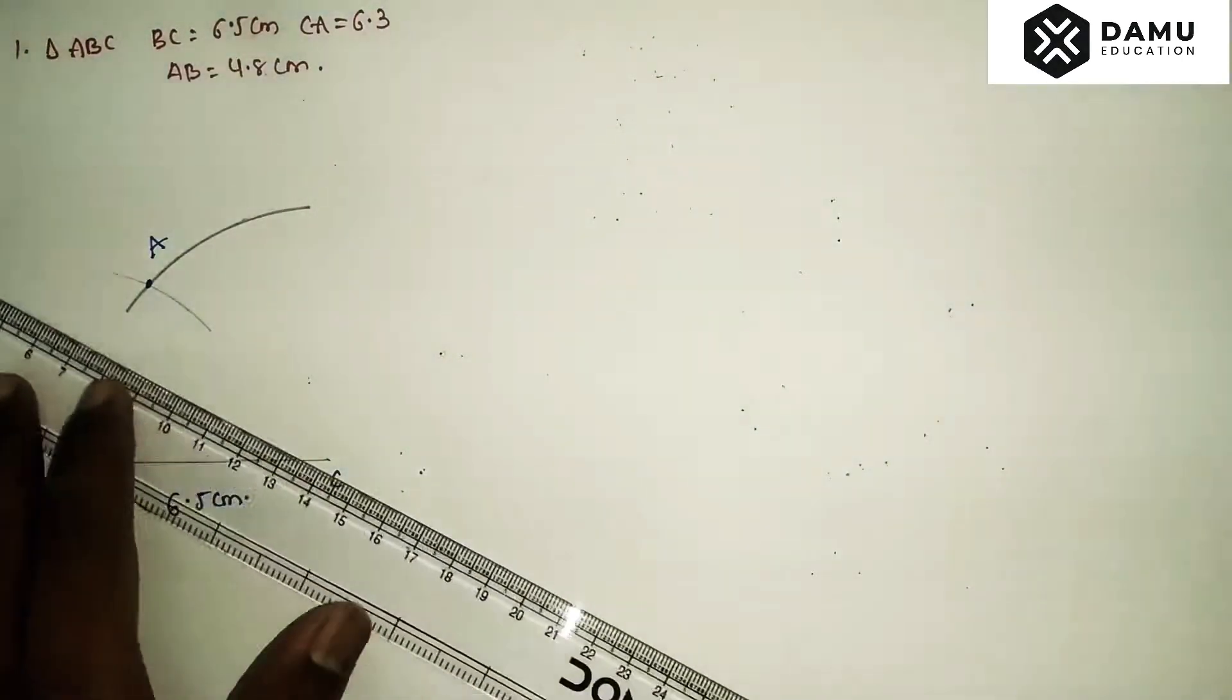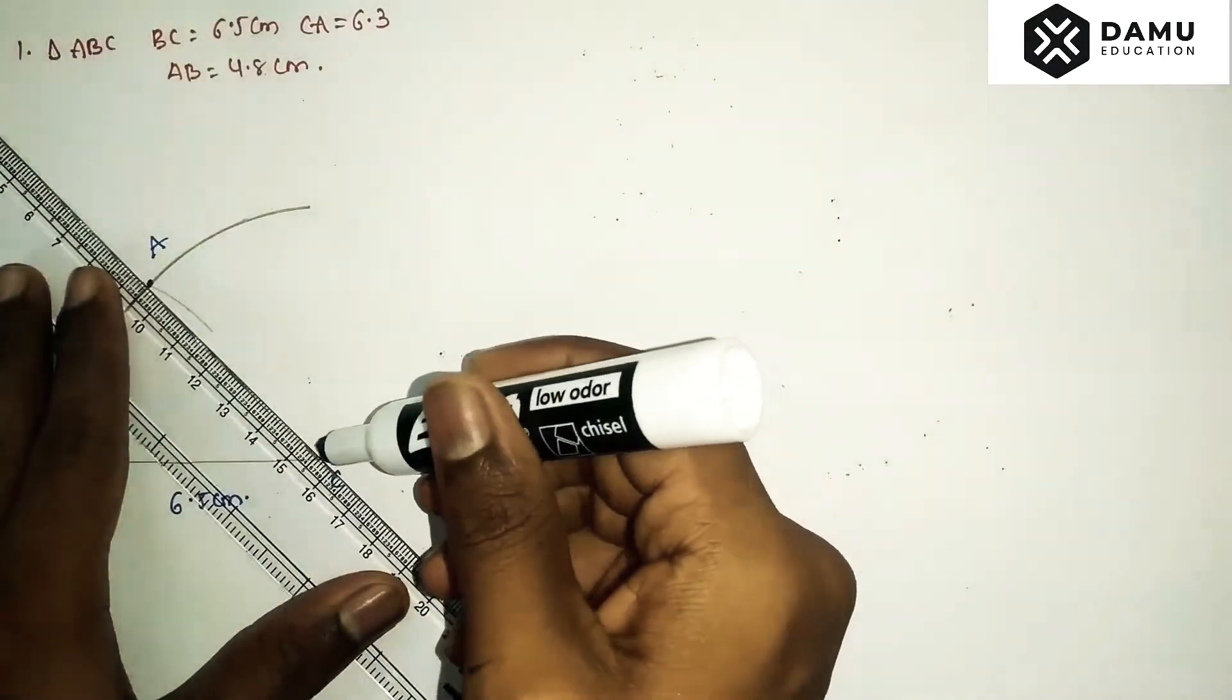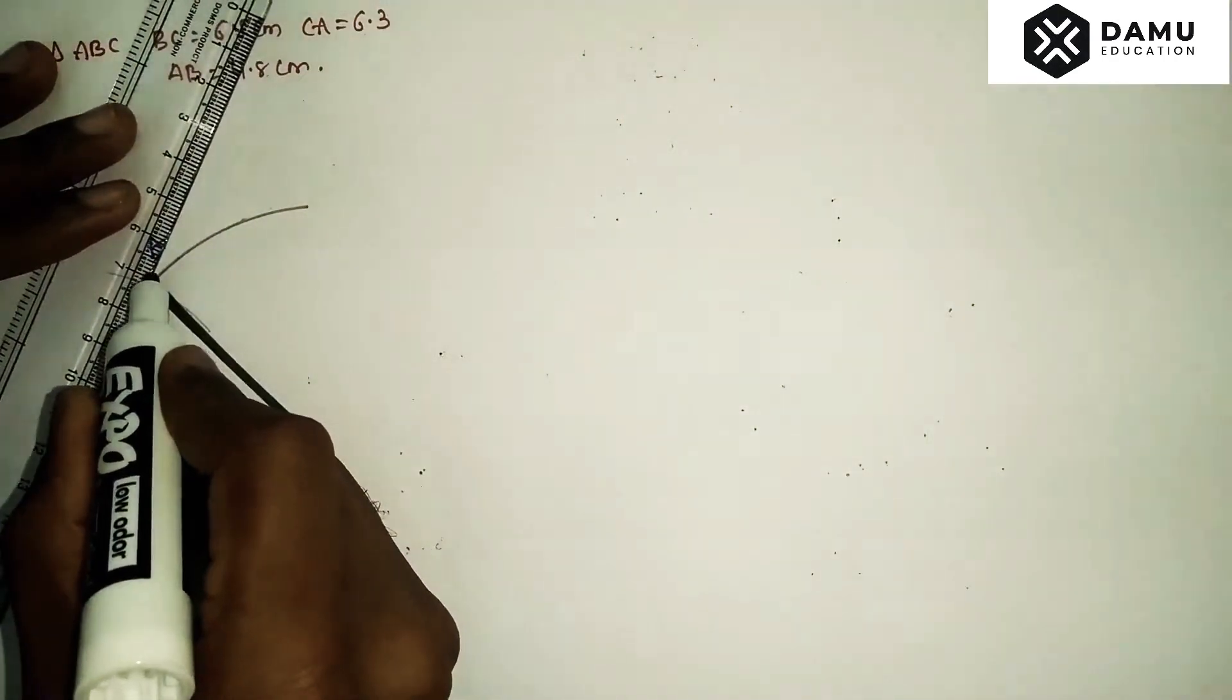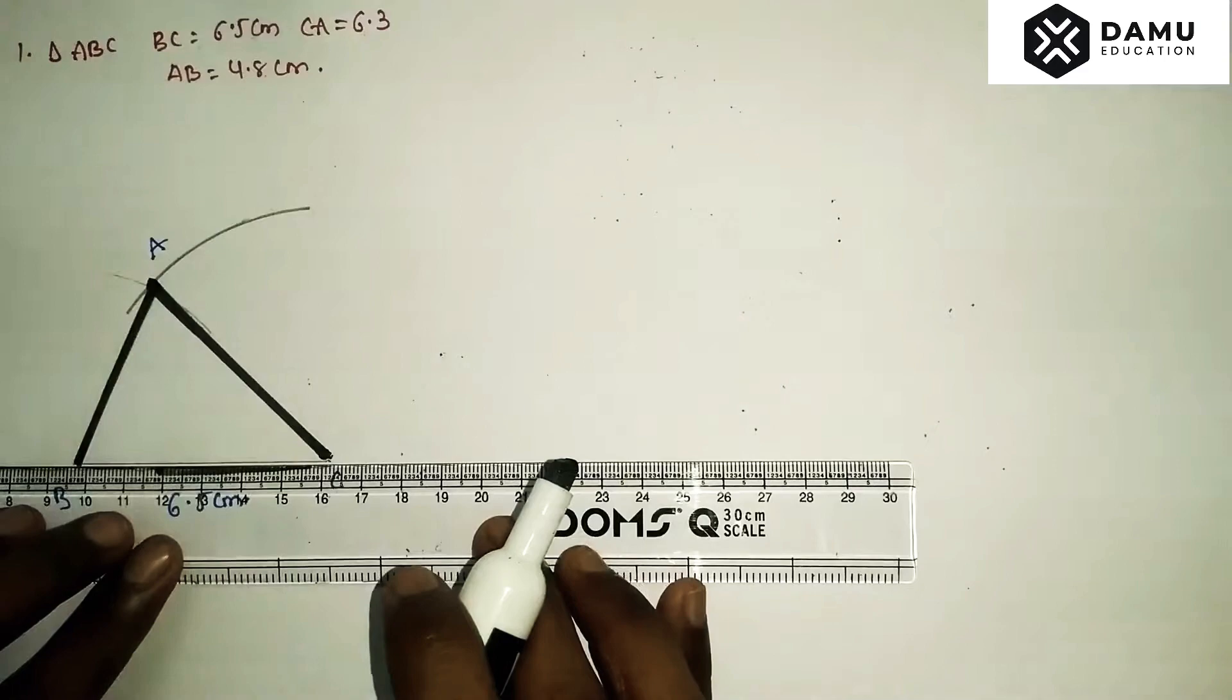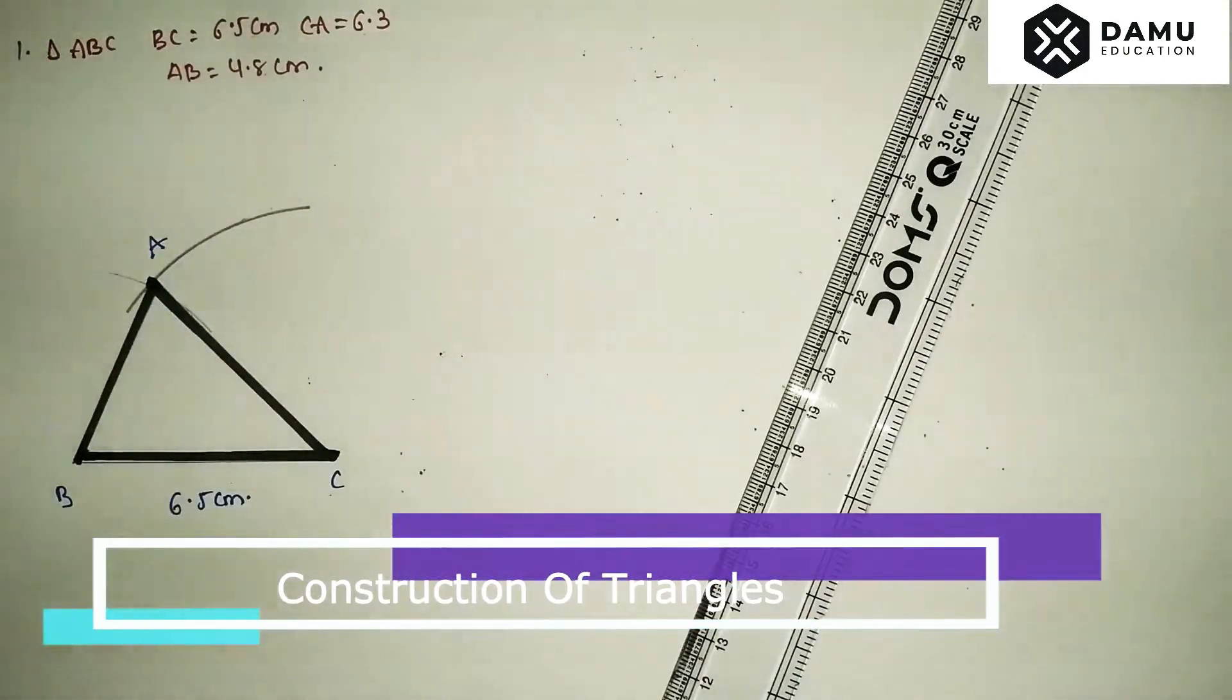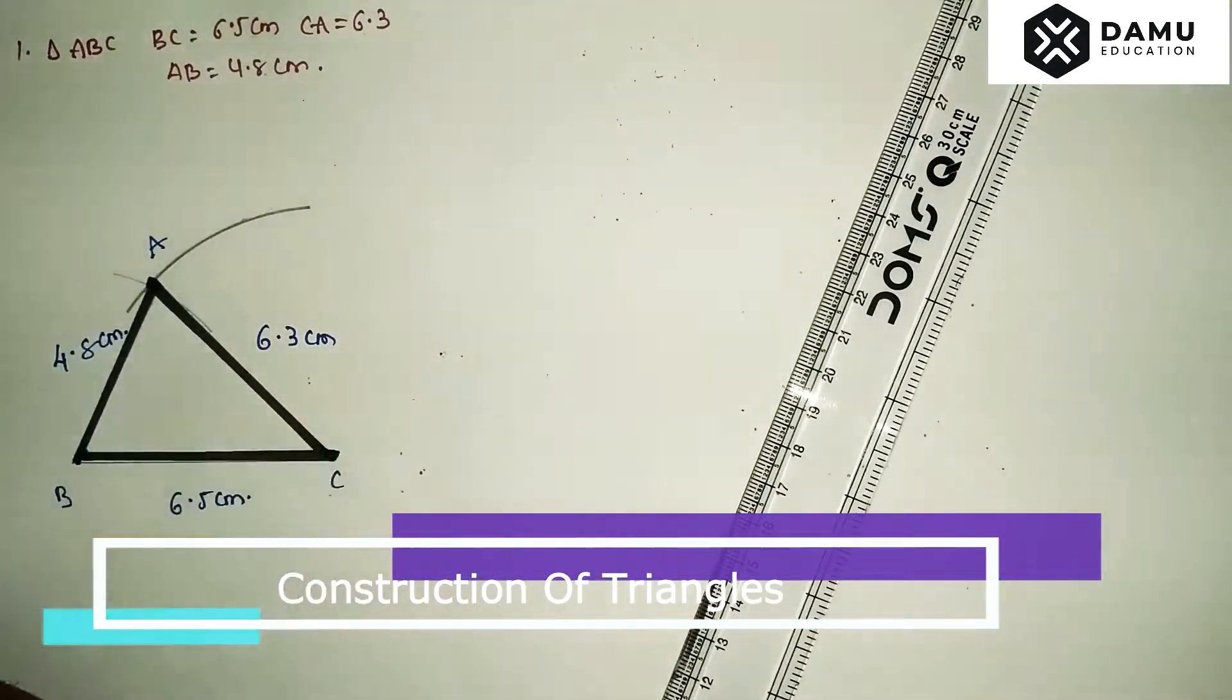Join the two line segments A and C, and A and B. Then draw triangle ABC. These measurements are AC equals 6.3 cm and AB equals 4.8 cm.